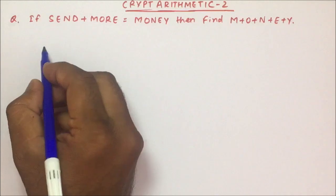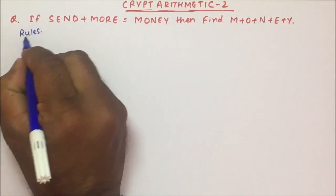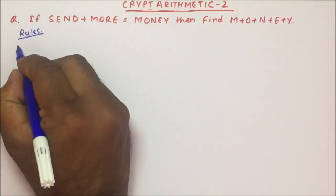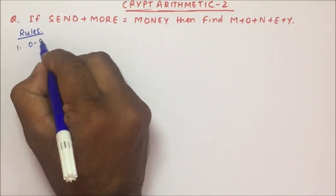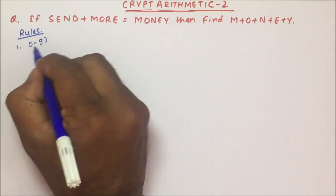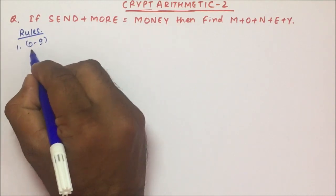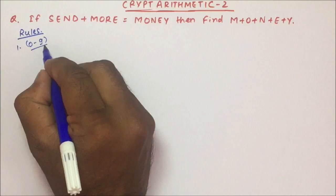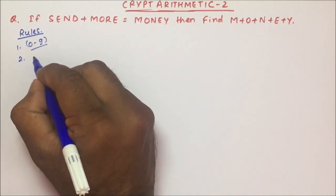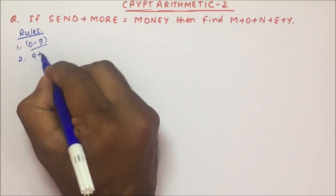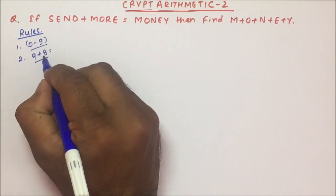Before solving the question, we discussed a few rules in the previous video. All alphabets have to be represented by values from 0 to 9, and each alphabet's representation will be with a unique digit — each digit has to be unique.